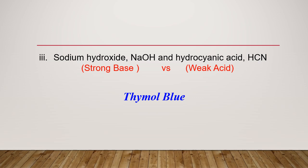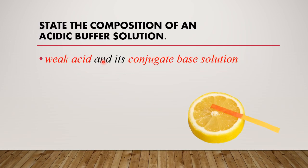State the composition of an acidic buffer solution. This one we mentioned just now. For an acidic buffer solution, it must have the weak acid and its conjugate base solution. So the conjugate base normally comes from the salt.